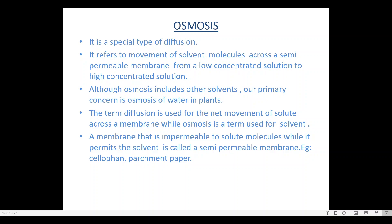Next, coming to osmosis. Most students get confused between diffusion and osmosis. Osmosis is also a special type of diffusion. It refers to the movement of solvent molecules across a semi-permeable membrane from a low concentrated solution to a high concentrated solution. The key difference: in diffusion, molecules move from high to low concentration; in osmosis, only solvent molecules move from low to high concentration across a semi-permeable membrane.